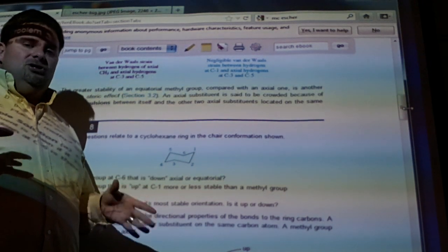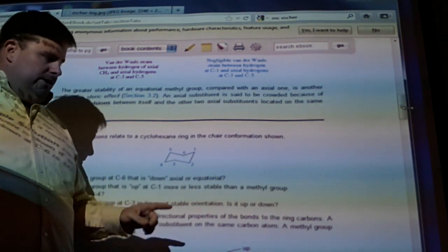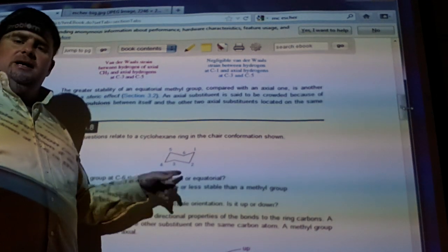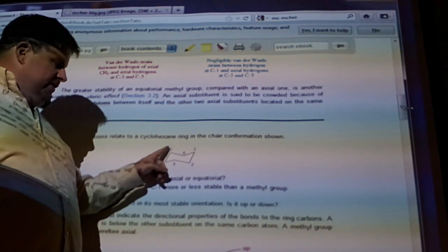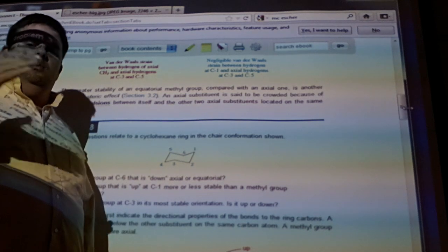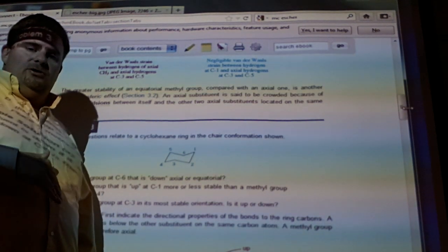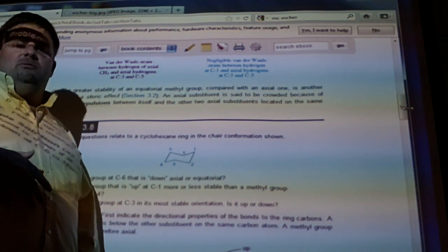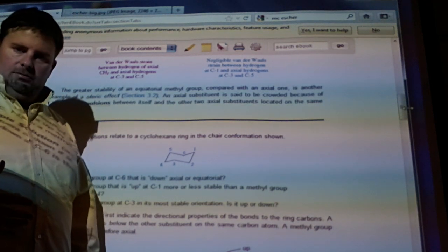When you think about these things, just look at the vertex. That's what I do. Is this thing pointing down? And yes, that's going to be the axial position. This thing pointing up, that's the axial position. Then look at whatever is attached to it, whatever's equatorial to those two things, and determine whether that's going to be up or down.